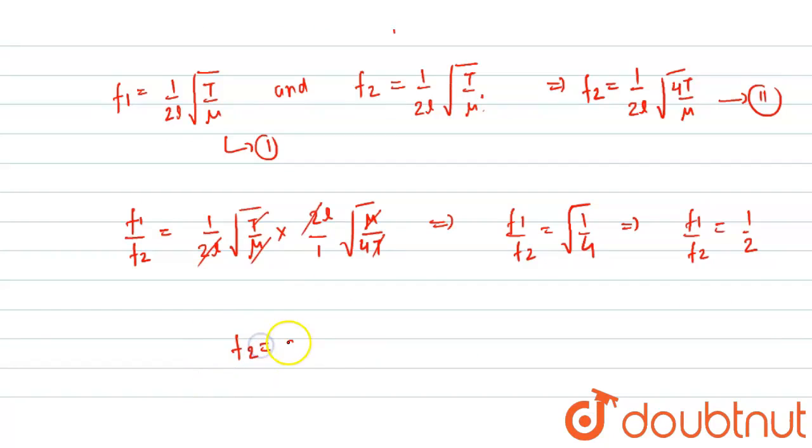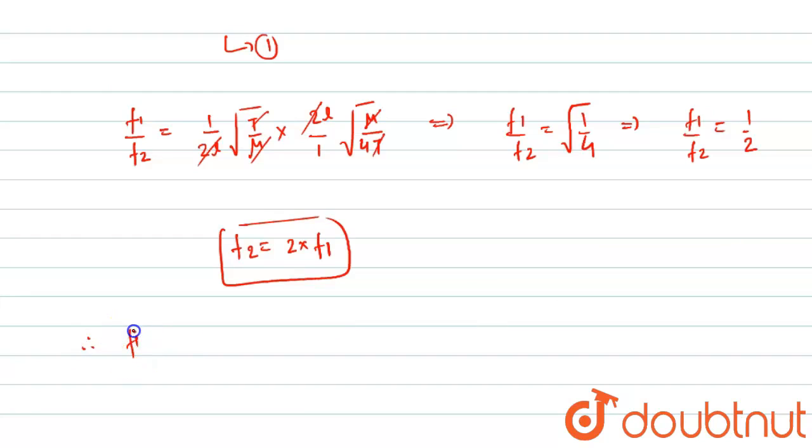f2 is equals to two multiplied by f1. Okay, so from here we get that final frequency f2 is double of initial frequency.